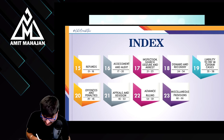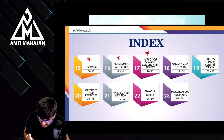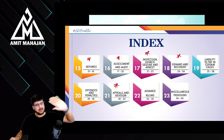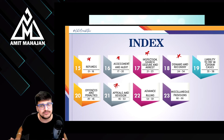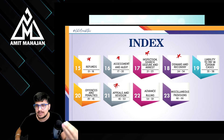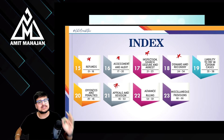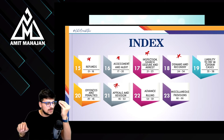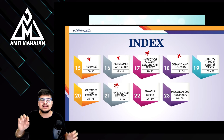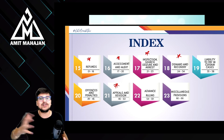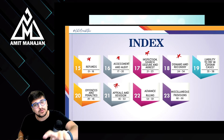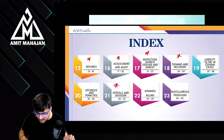So, which are those chapters? First is refunds, second is assessment and audit, third is inspection, search and seizure, fourth is demand and recovery, fifth is appeals and revisions. From these five chapters you can expect 15 to 20 marks. Advance ruling is a very small chapter, you can do that too. Make sure you look at all questions from these 5 chapters thoroughly. If your concepts are clear and you have practiced the questions, your study will be perfect — please don't ignore this, because this can be a game-changer for you.